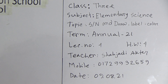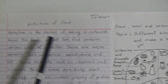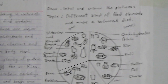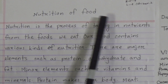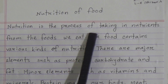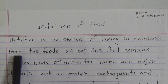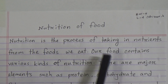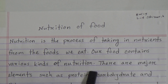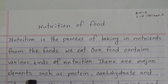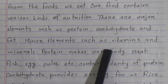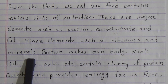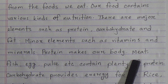Let's start our class. Today's topic: short note and draw, label, and color the picture. The name of the short note is 'Nutrition of Food.' Nutrition is the process of taking in nutrients from the foods we eat. Our food contains various kinds of nutrition. There are major elements such as protein, carbohydrate, and fat, and minor elements such as vitamins and minerals.